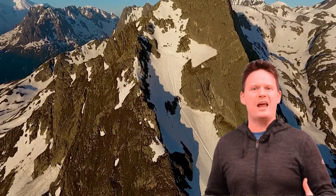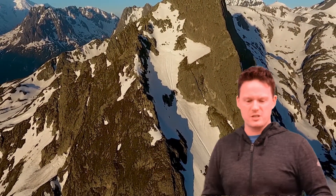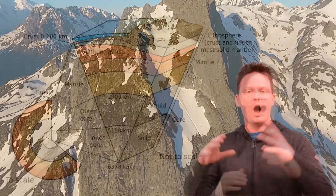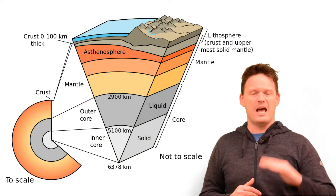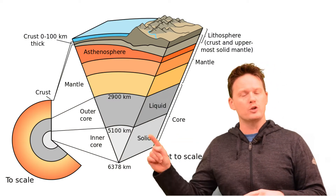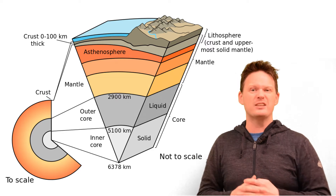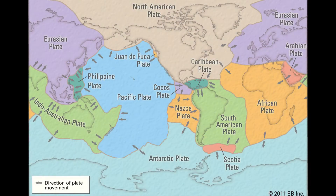Oceanic crust tends to have oceans on top of it, but not always. Continental crust is what we stand on — what we live on — the stuff that's above the sea, terra firma. Our oceanic crust is thinner and denser, dominated by basalt. Our continental crust is less dense, thicker, and dominated by granite.